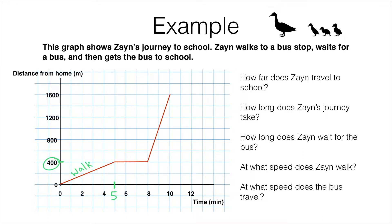Next we've got a flat section of the graph. His distance away from home is not changing — five minutes after leaving he is 400 meters away, and even at eight minutes after leaving he's still 400 meters away. This flat section corresponds to him waiting for the bus. On a distance-time graph, a flat part means the distance is not changing — in other words, he's staying still.